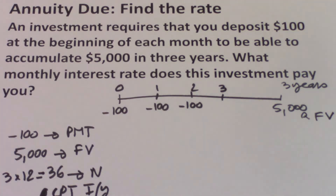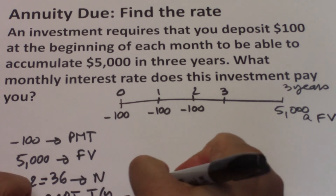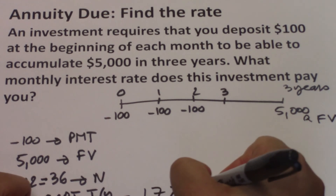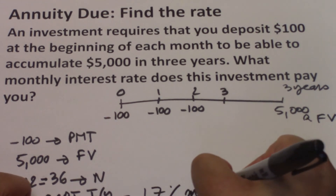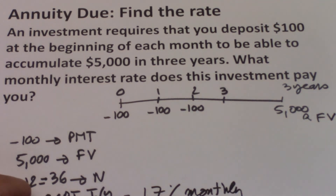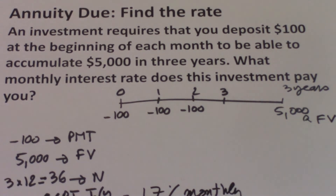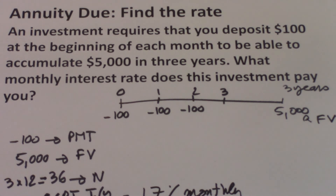So 1.7% is a monthly interest rate. Because you inputted the payment and N as monthly numbers, you get 1.7% monthly. For this investment, we get a 1.7% return per month.